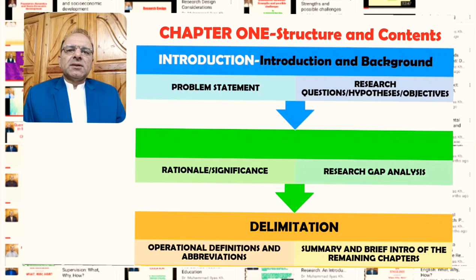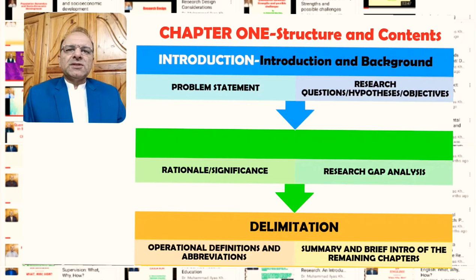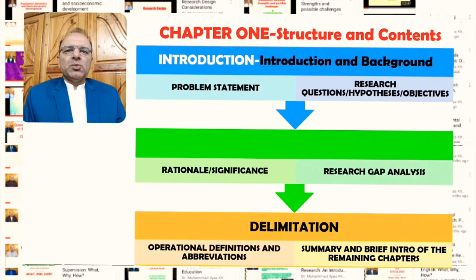The rationale and significance sections are also generally essential parts of Chapter 1. Here, the research issue or problem has been rationalized, and in the significance part, the importance of exploring the particular topic is highlighted. These sections are very important for the writer to indicate why they have conducted this particular study, why they want to explore this topic, and what the importance of the outcomes is.